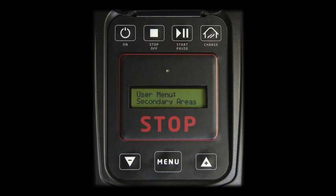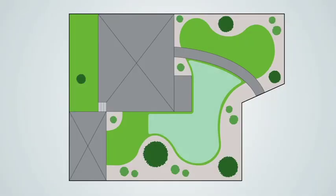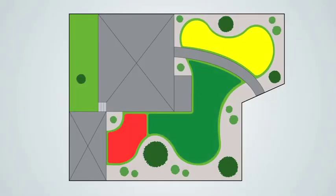Press Menu to access Secondary Areas. The robot handles one or more secondary areas according to the technical specifications of each specific model. If you decide to divide your garden into primary and secondary areas, you also have to proceed with the programming of secondary areas for the robot to know how to reach them and how much time to spend working in them.